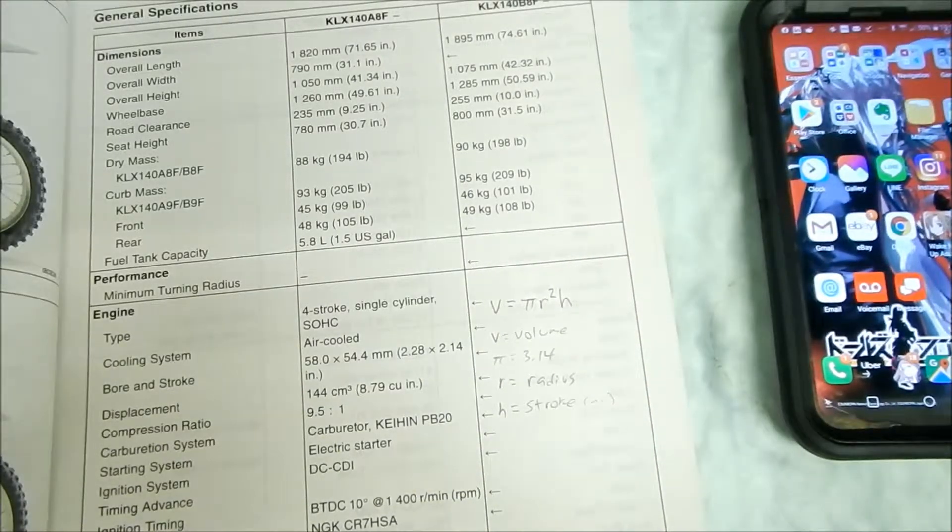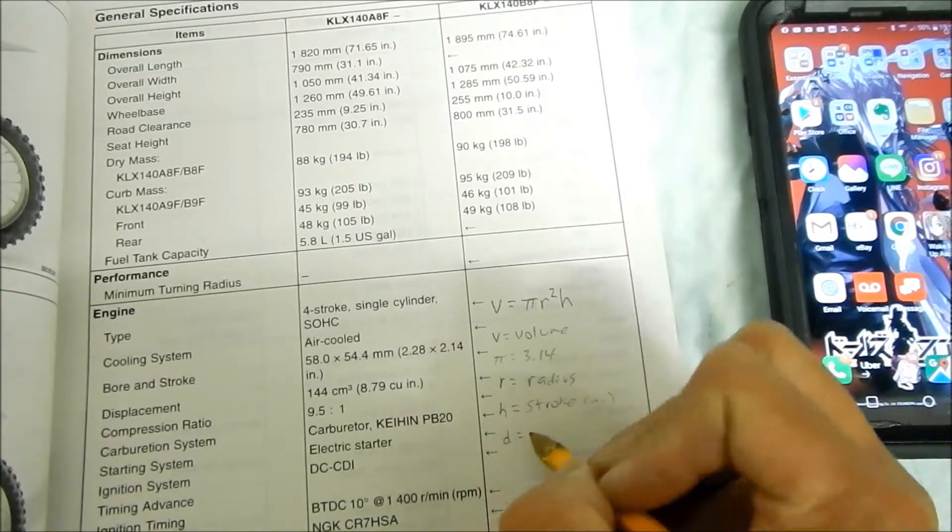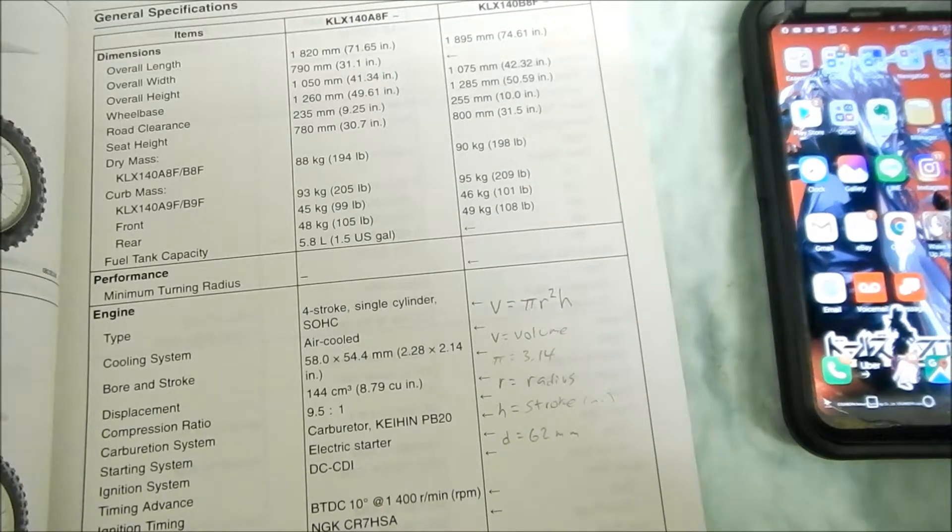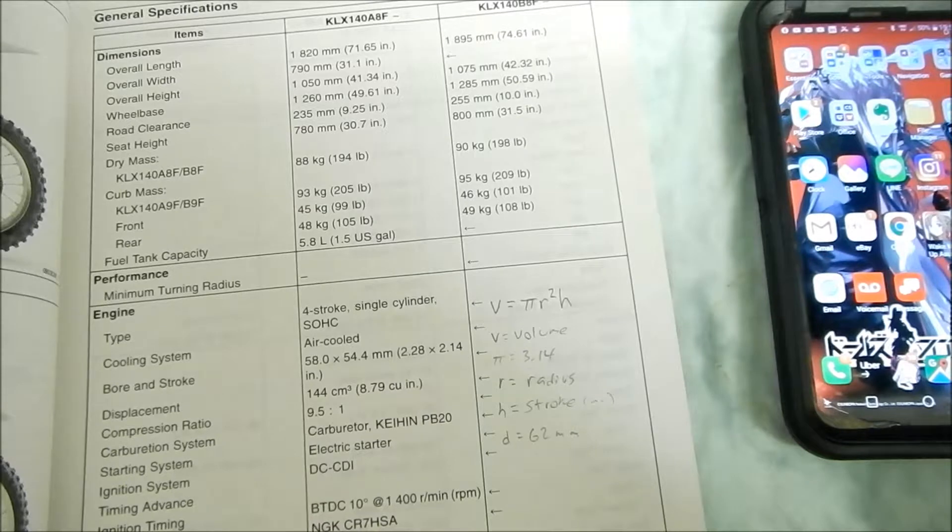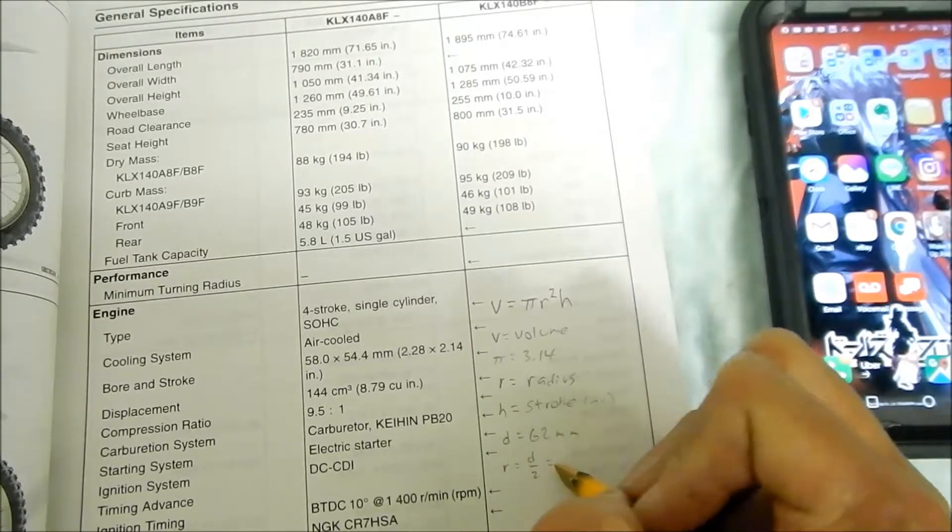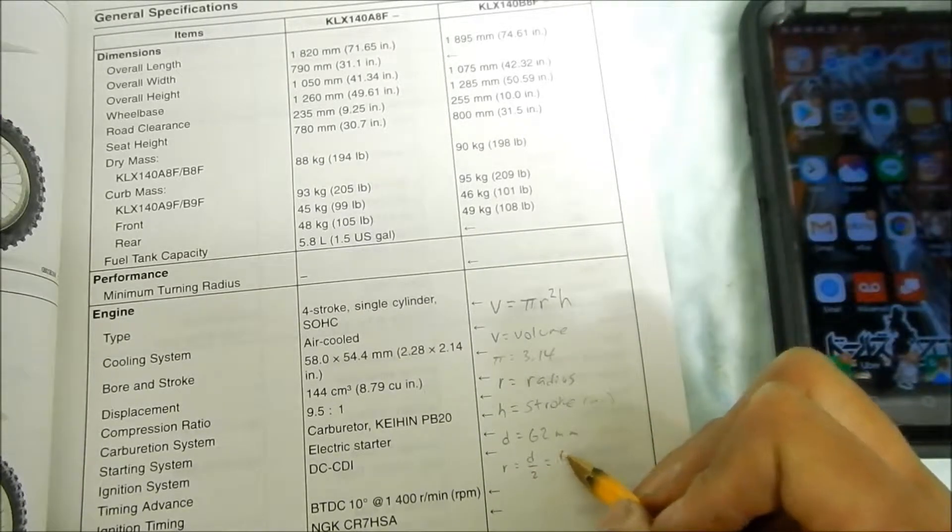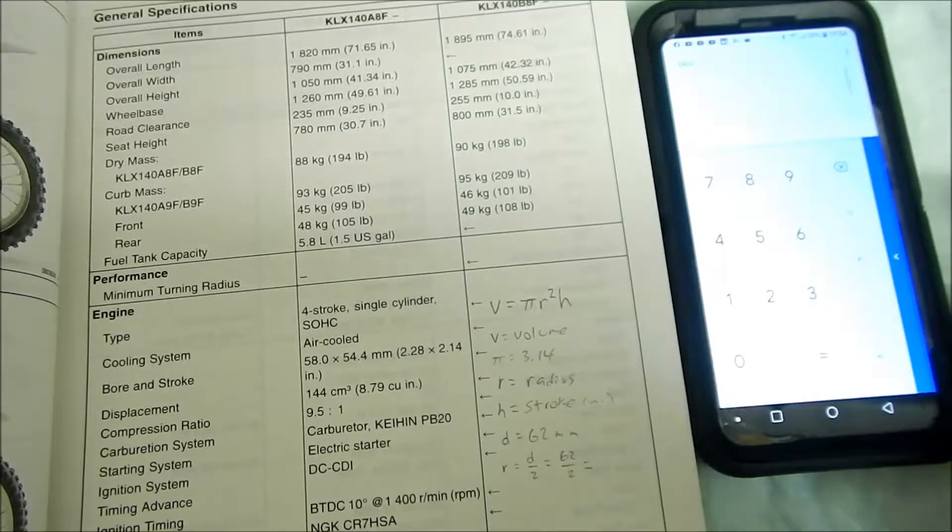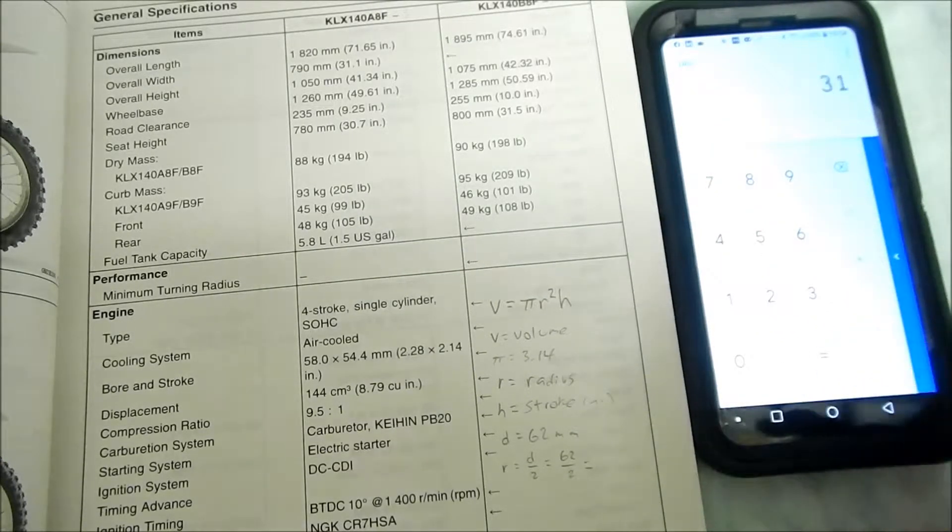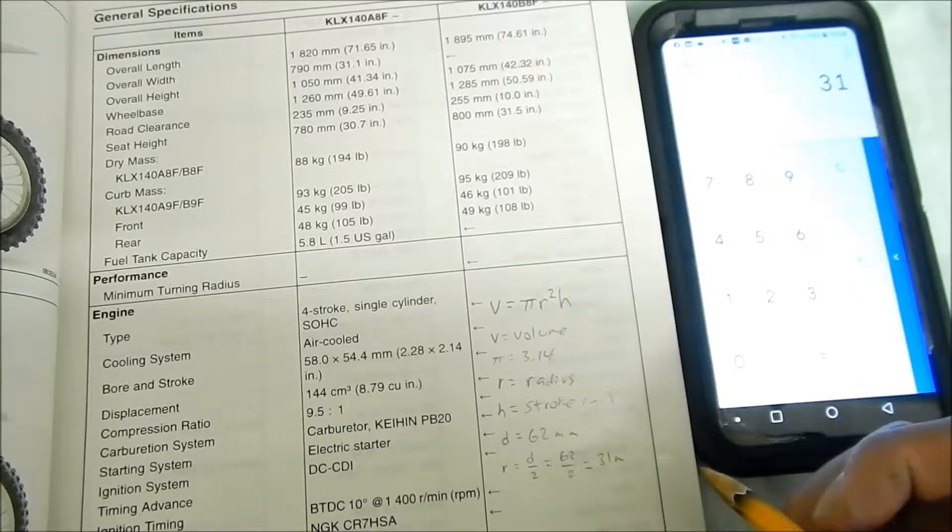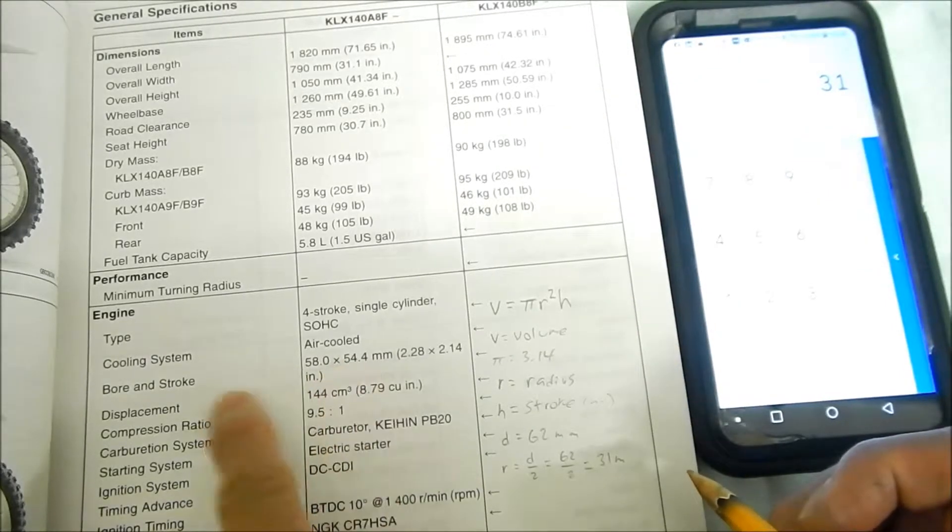So we got d equals 62 millimeters is what we got. So we need to find the radius. To find the radius from the diameter you divide, so radius equals d over 2, divided by 2. So we take 62 divided by 2. We get my handy dandy calculator here, 62 divided by 2 is 31. So 31 millimeters is the radius.